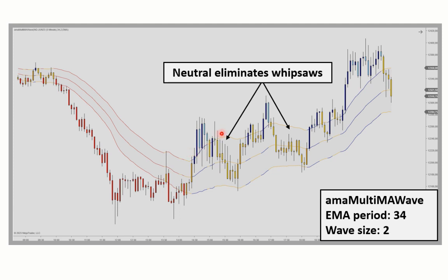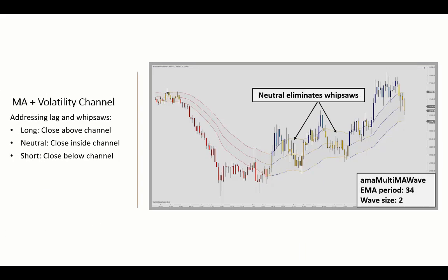In this case, you would be able to stay in the long position as it is not contradicted by a bearish or negative trend reading. As with the moving average cross indicator, the moving average wave also features a selection of 30 different algorithms. You can also customize the wave bands using the multiplier function. The default value of one creates an EMA wave using the highs and lows of the specified lookback period.